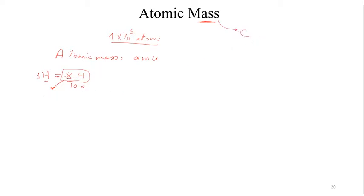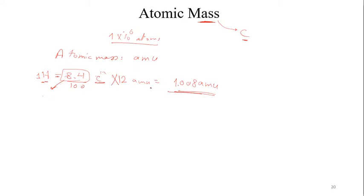The mass of hydrogen relative to carbon is 8.4. So the atomic mass of hydrogen equals (8.4 / 100) × 12 atomic mass units of carbon, which equals 1.008 amu. This is how we get the atomic mass of one hydrogen atom.